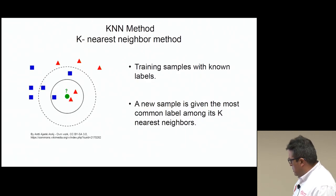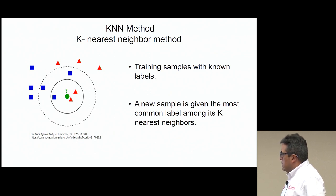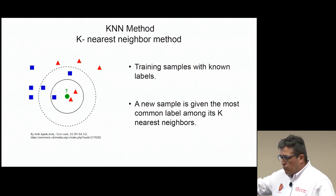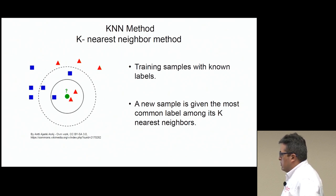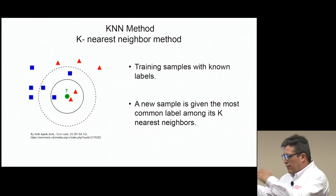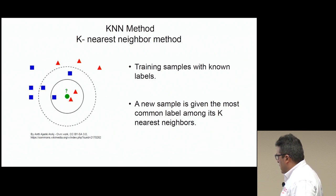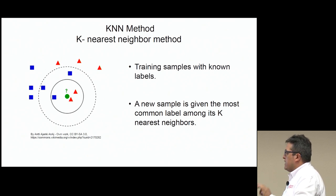This third method is based on the K-nearest-neighbor (KNN) machine learning method, which is a supervised machine learning algorithm. The previous one was unsupervised. In this case, you have training samples with known labels — you say these samples are signals, these samples are noise — and you can enter different types of signals with labels. Each time a new sample comes into the system, it is given the most common label among its K-nearest neighbors, where K is a value you choose.